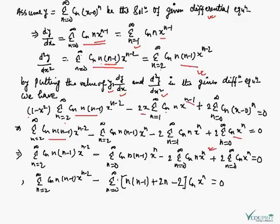Now we know the rule. There are two conditions: the summation indices should be the same, and the power of x should be the same. In the first term, if we make the summation indices start at n = 0, then the power of x is different. So we are going to leave the first series as it is. In the second, third, and fourth series, the power of x should be the same, with x to the power n running from 0 to infinity.